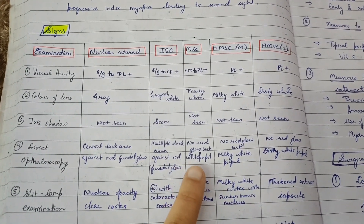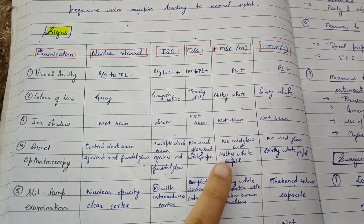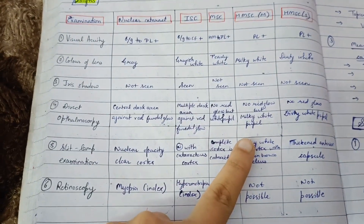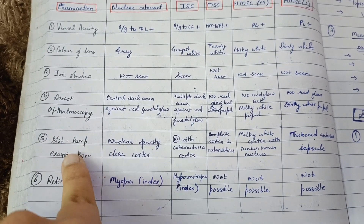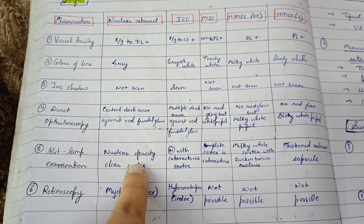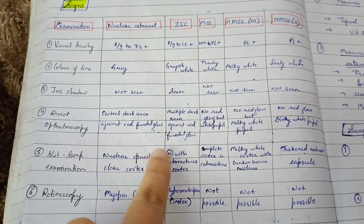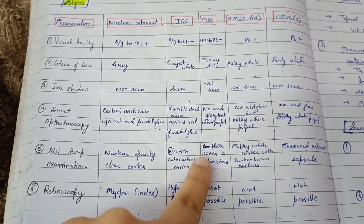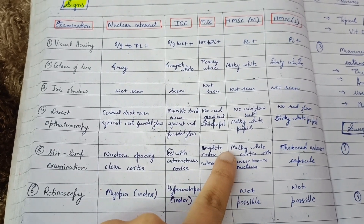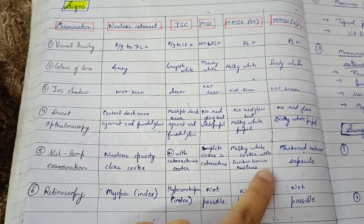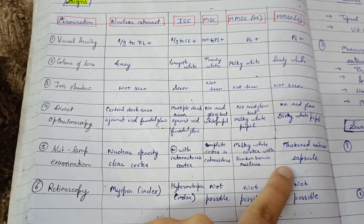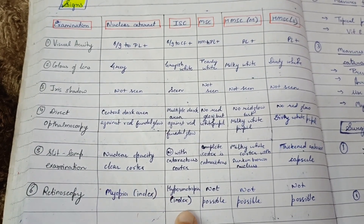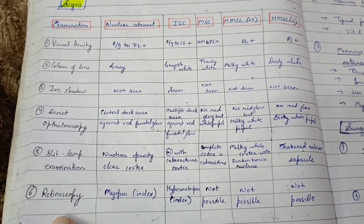In mature cataract, no red glow is seen but a white pupil is present. In hypermature morgagnian, no red glow but a milky white pupil is seen. In hypermature sclerotic, no red glow but a dirty white pupil is seen. On slit lamp examination: in nuclear cataract, clear cortex is seen; in immature, normal with cataracts in cortex; in mature, complete cortex is cataractous; in hypermature morgagnian, milky white cortex with a sunken brown nucleus; in hypermature sclerotic, thickened anterior capsule. In retinoscopy, nuclear cataract shows index myopia; in immature type, also index myopia; retinoscopy is not possible in other cases.